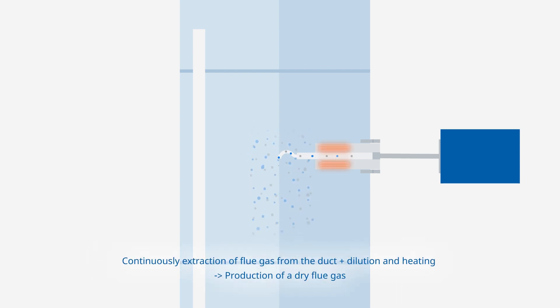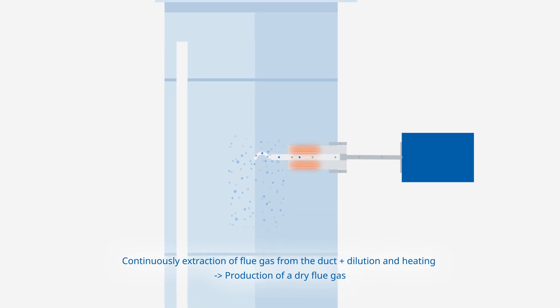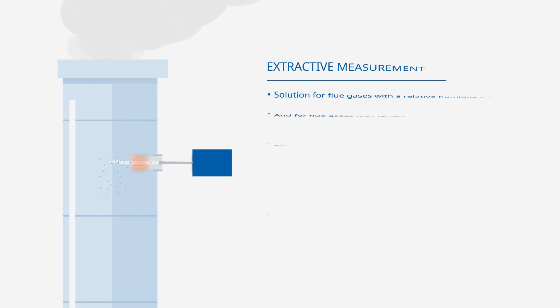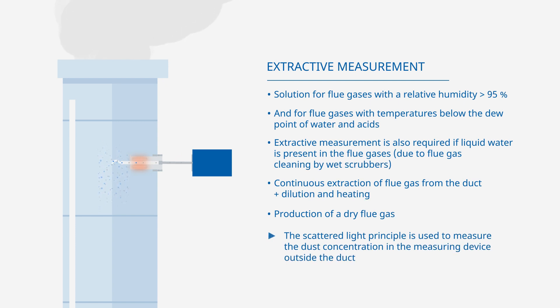For extractive measurement, the flue gas is continuously extracted from the duct by a probe, diluted and heated. This produces a dry flue gas. The scattered light principle is used to measure the dust concentration in the measuring device outside the duct.